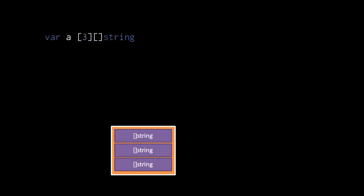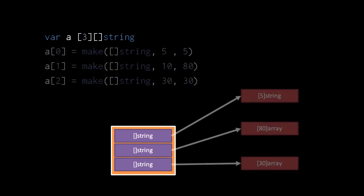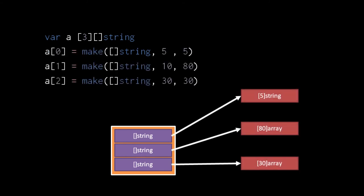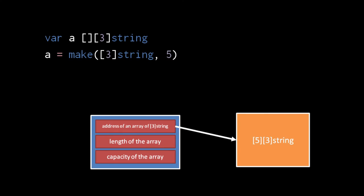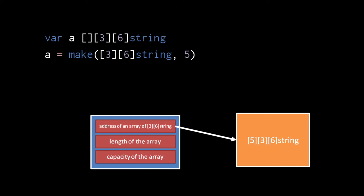Like with any other type in the language we can create arrays of slices. Here we have an array of three slices of strings. The slices all start out as zero slices so we assign them each a non-zero slice created with make. We can also create slices of any type including slices of arrays. Here we have a slice of arrays of three strings. When we use make to create a slice of arrays of three strings with a capacity of five, the underlying array is then an array of five arrays of three strings.